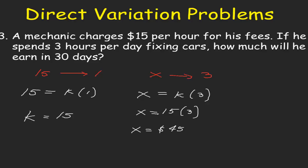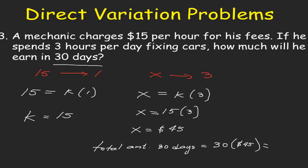But the unknown is 30 days. So the total amount for 30 days, we will have 30 multiplied by $45. So 30 multiplied by 45 gives us $1,350. This is our answer for number 3.